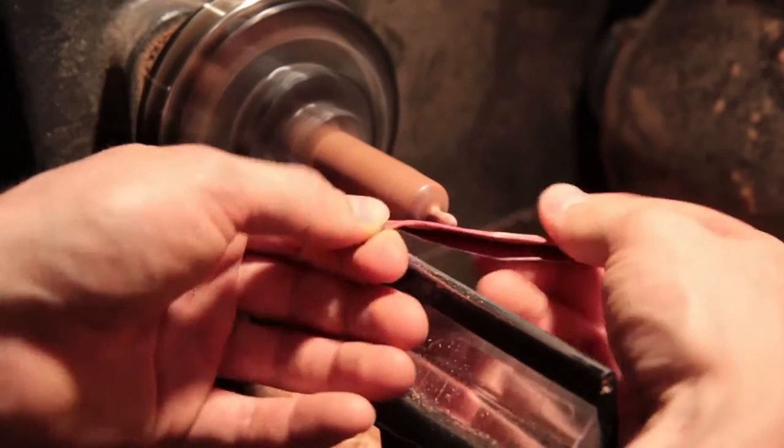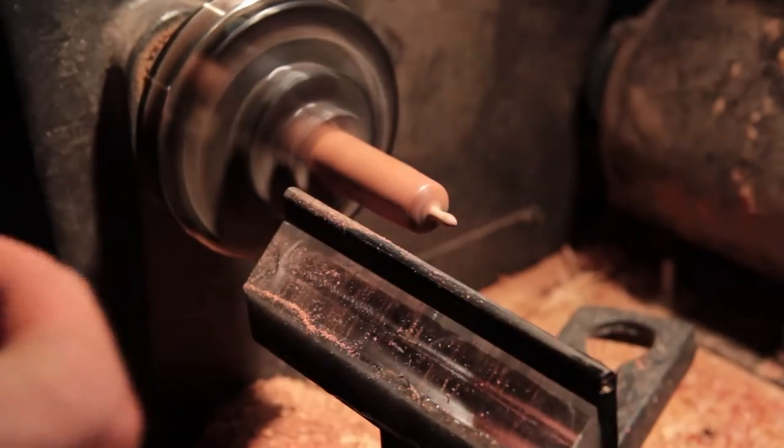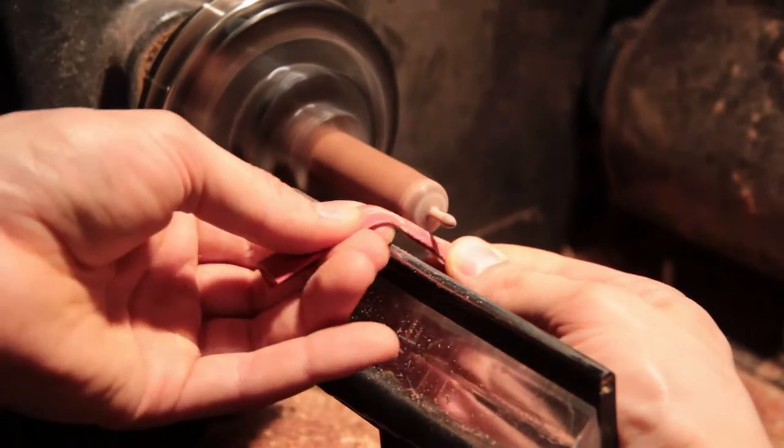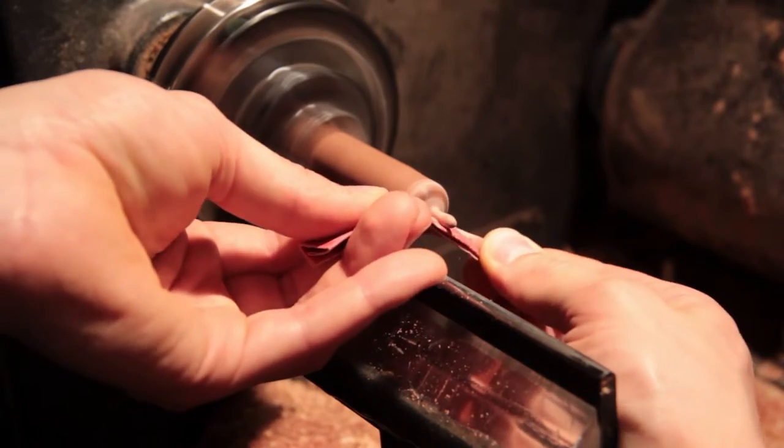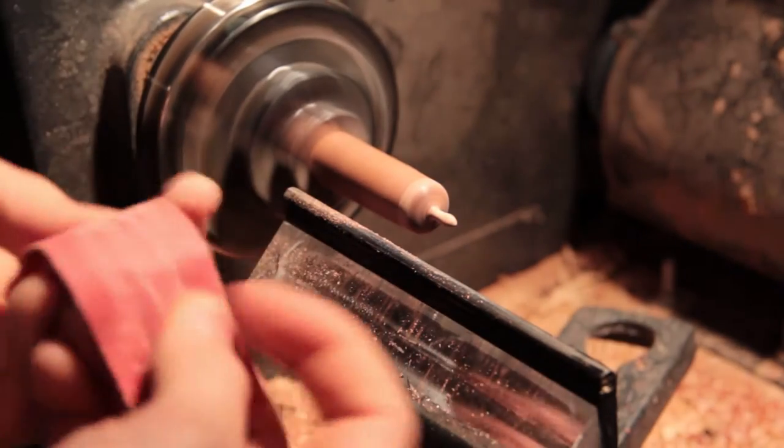You'll notice I have the sandpaper folded and then just moving it around, and I'll refold it a few different times here just to expose new parts that aren't full of dust, and also to get different stiffness in the paper as I'm pushing it along the surface.